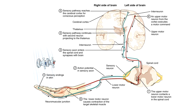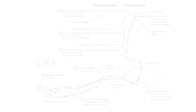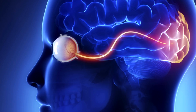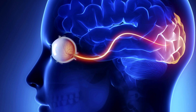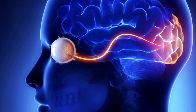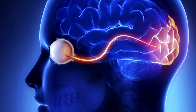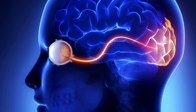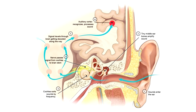Stimuli from the sensory organs travels along nerves to the brain, where much of the information is forwarded to specific parts, often to the cortex for processing. For example, cells in the eyes pass a cascade of signals through the brain to the primary visual cortex, located in the back of the head. And auditory information travels upwards through the brainstem and further to the auditory cortex for processing.